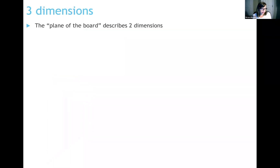Before we get started, I want to remind you that we live in a three-dimensional world, and we really should be able to describe vectors in three dimensions. So far you've really only seen them in two dimensions — in what we call the plane of the board. A plane is a two-dimensional space, like your computer screen, and many of the vectors I've drawn as arrows are being expressed in this two-dimensional plane.